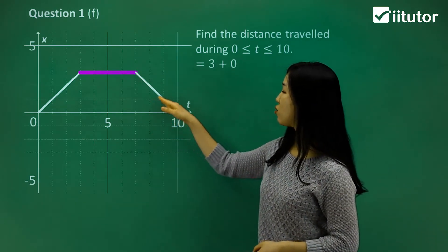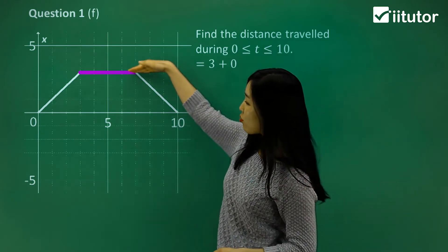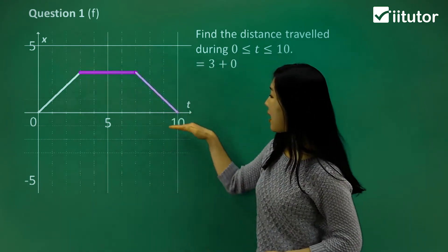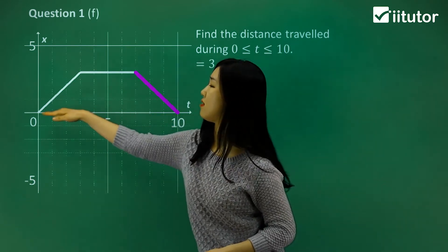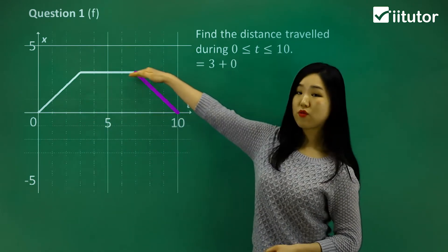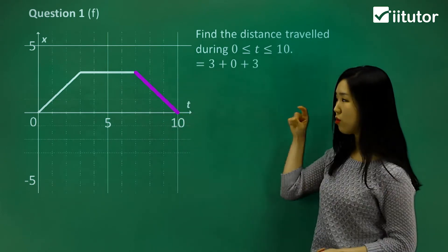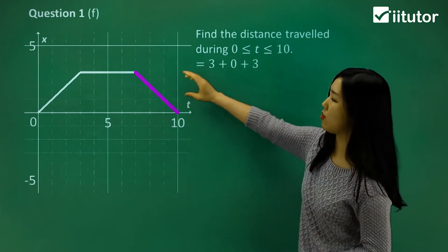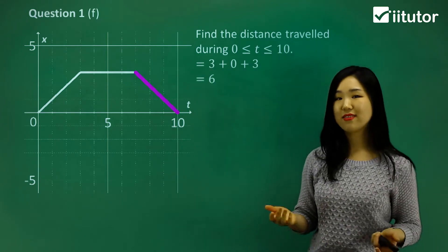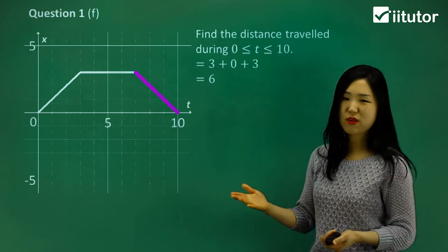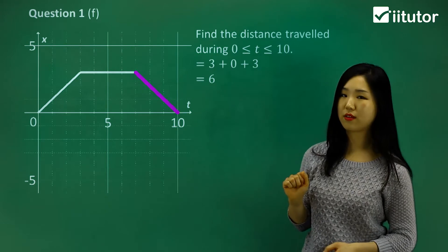For the part where we go backwards, we were at displacement 3, and now we're back down to 0 where displacement is 0. So when we've travelled from 3 to 0, we've pretty much travelled 3. The distance there is 3. We're always looking at the vertical distance. So 3 plus 0 plus 3 is simply 6. That's the total distance travelled — 6 units.